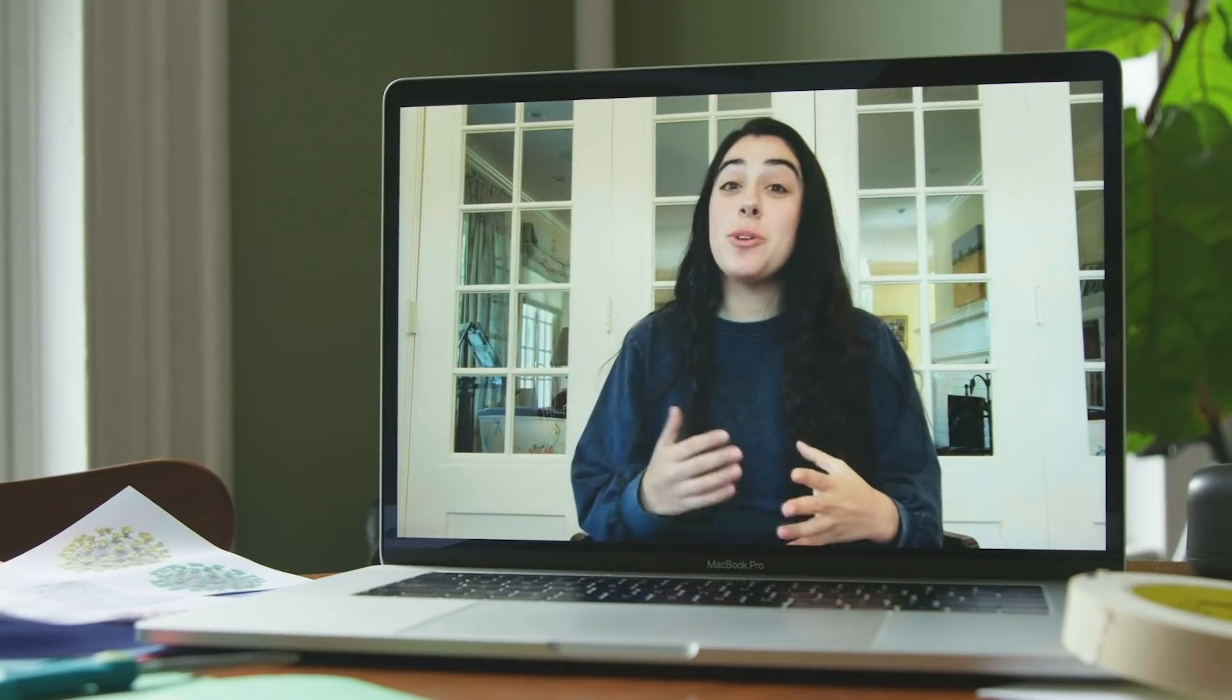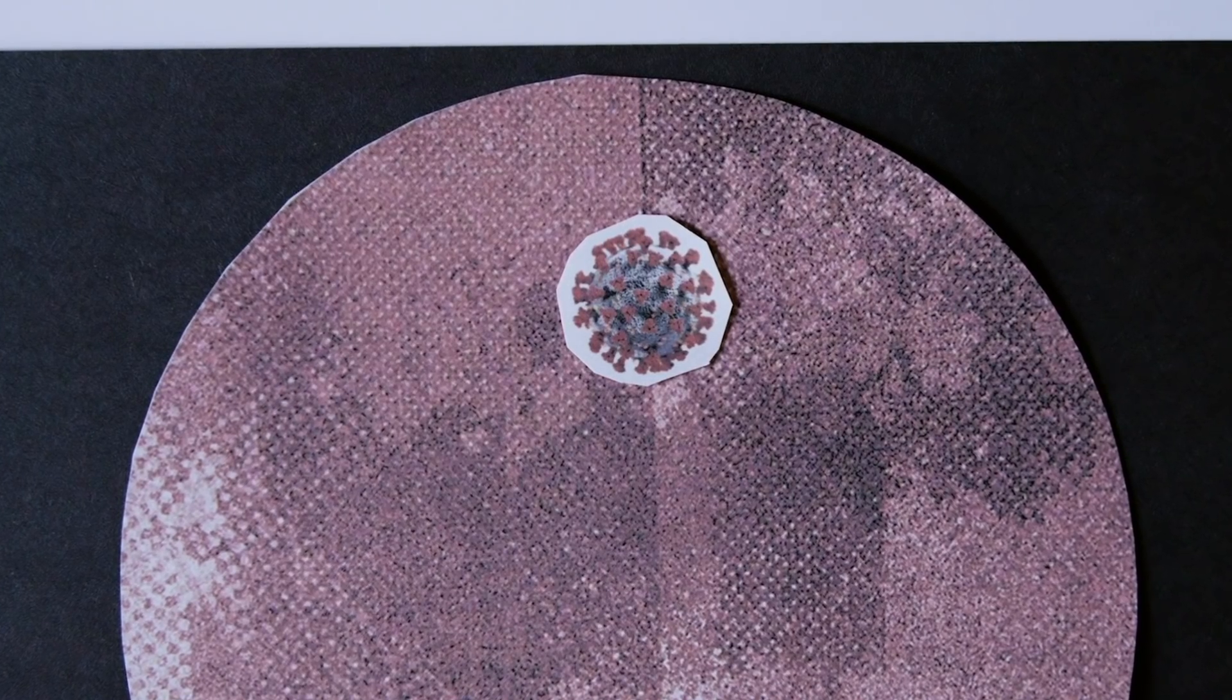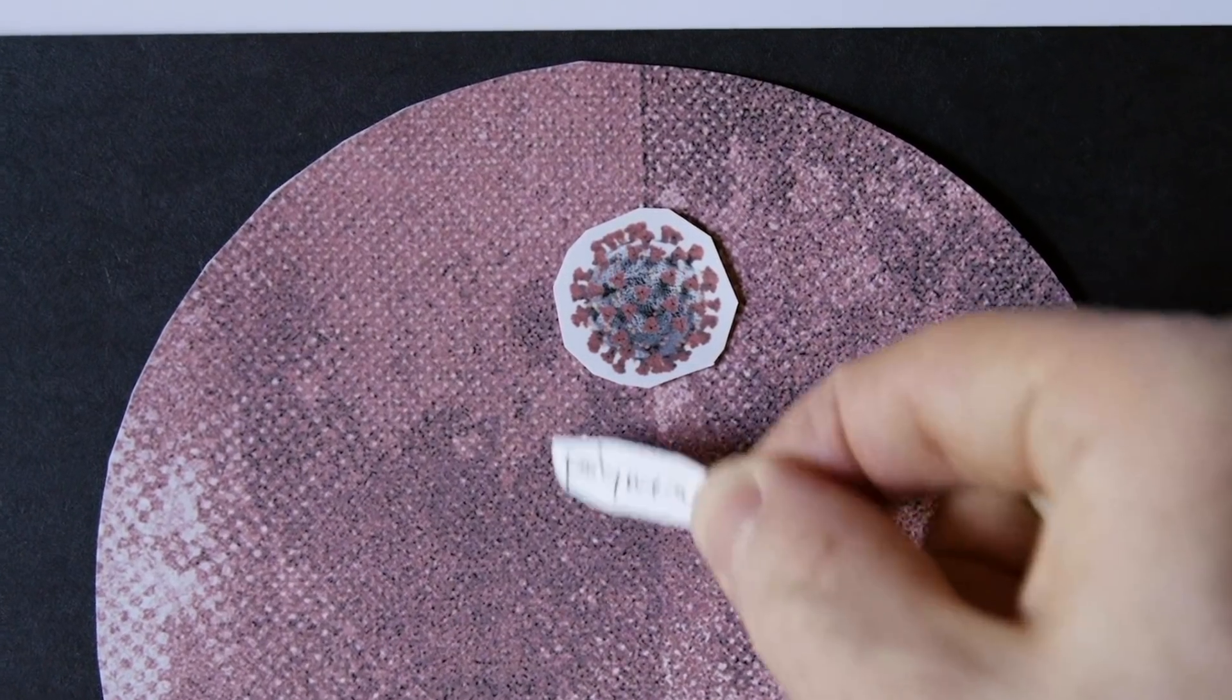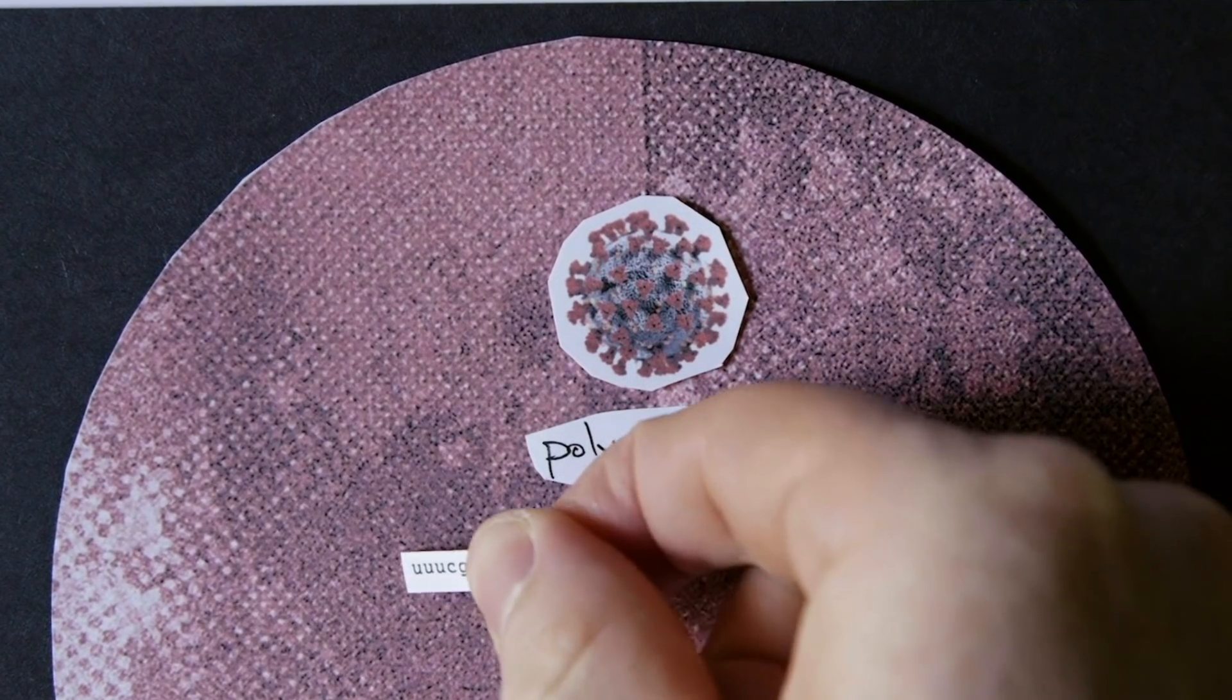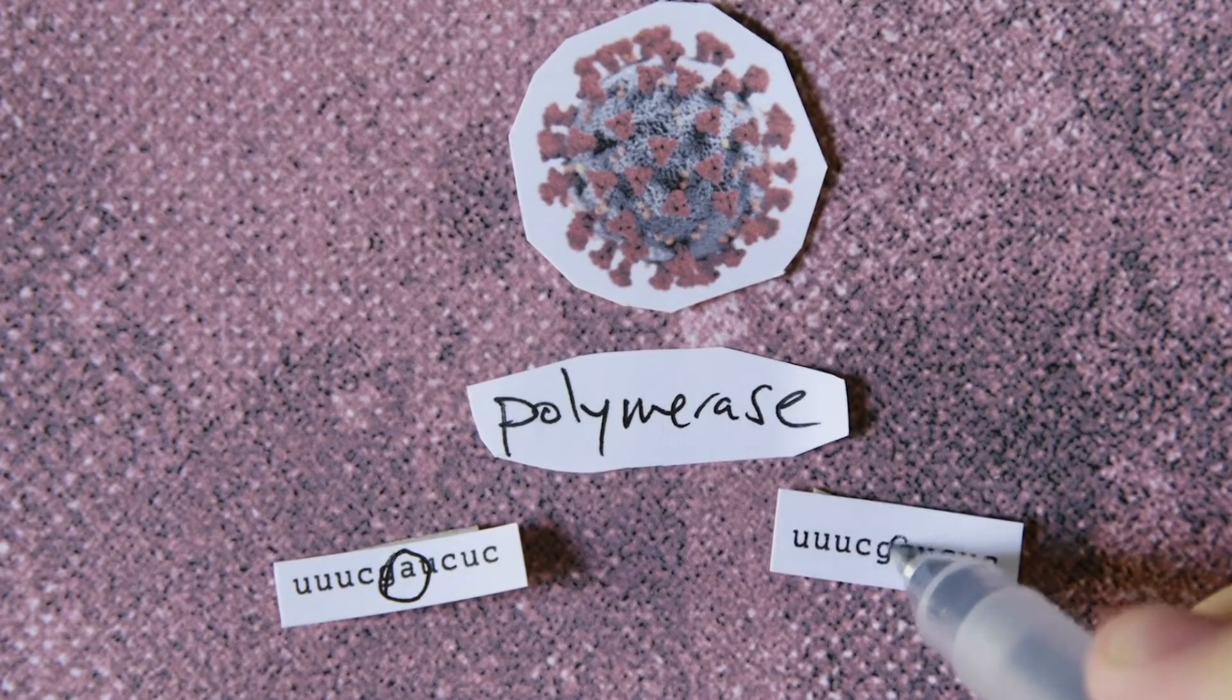Mutations are a natural byproduct of that process. The protein that's in charge of making copies of the virus's genes inside a cell, called a polymerase, can make mistakes. Sometimes it'll slip in an adenine in a spot where there's supposed to be a guanine.